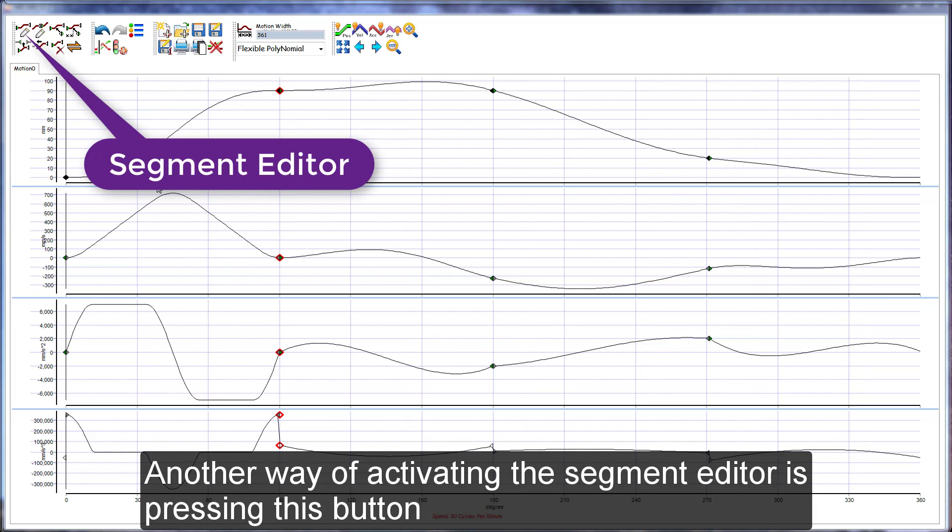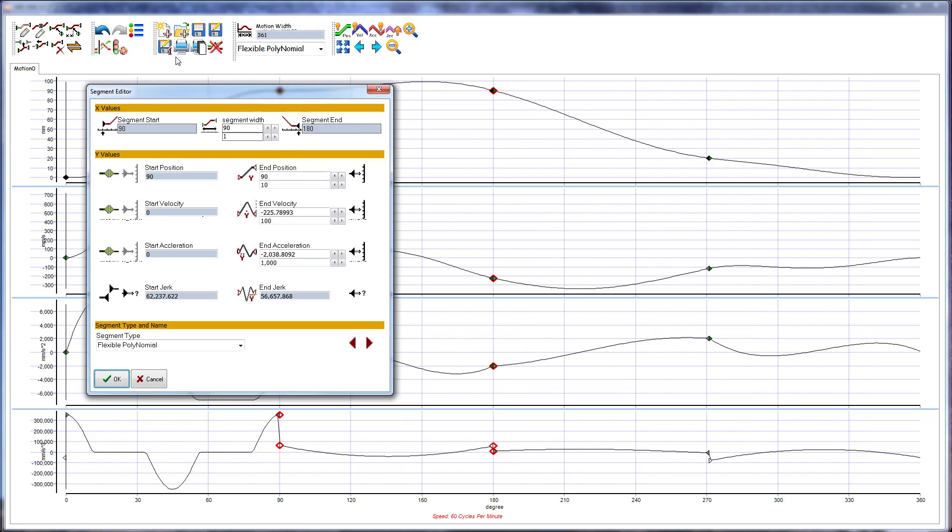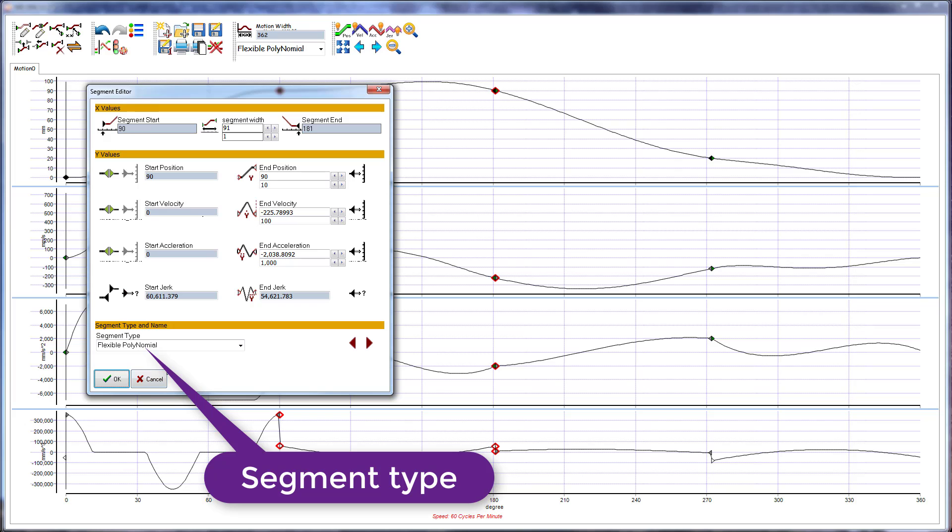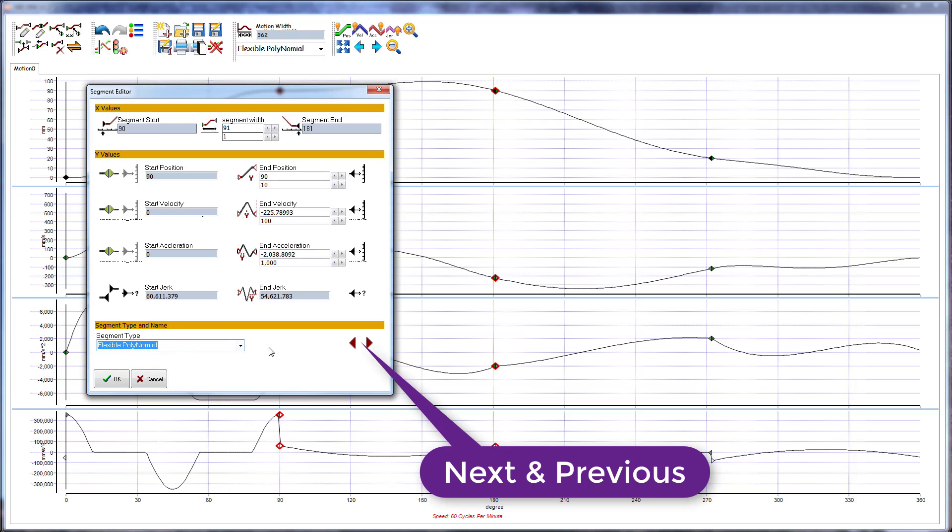Another way of activating the segment editor is pressing this button. We can also change the segment width here and type here and edit adjacent segments by pressing these back and forward buttons.